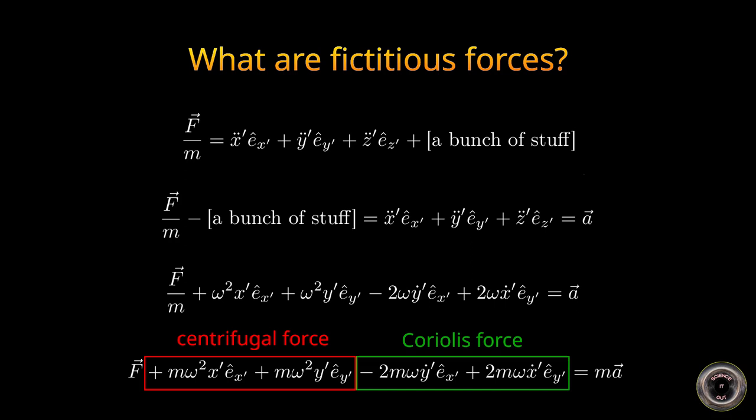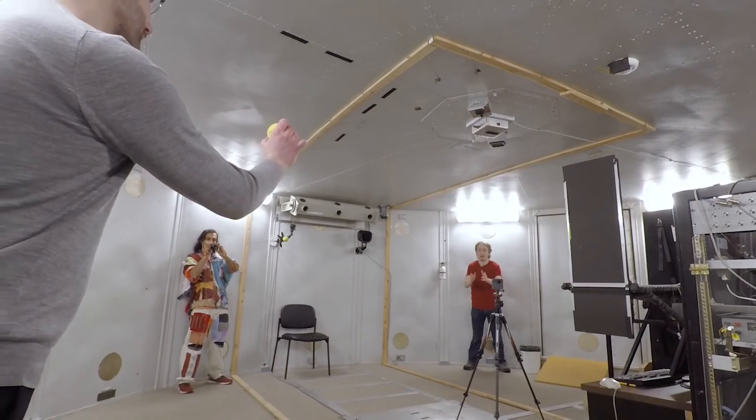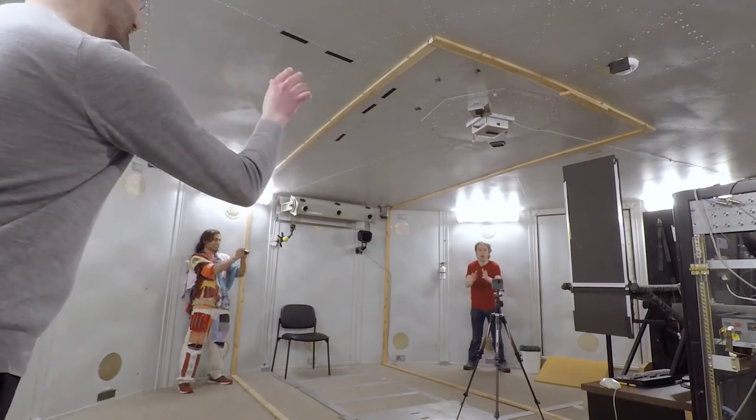Anyway, this is what the Coriolis effect is in its core. It's the appearance of this term, this fictitious force in a rotating frame of reference. It manifests as objects turning mid-air when observed by a rotating observer.